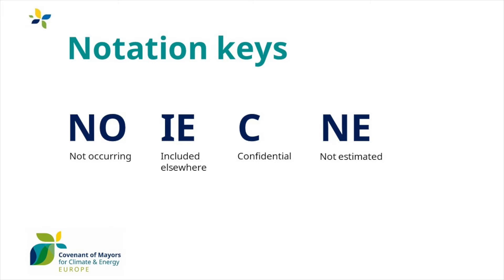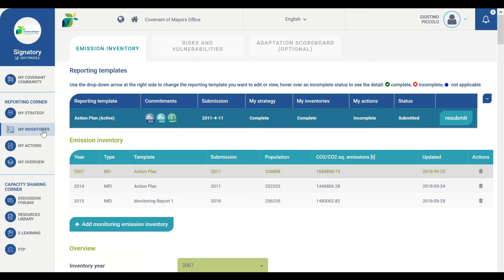You will be able to select another notation key from the drop-down menu included in each cell, or use the same drop-down menu to type in a numerical value. To access the emission inventory section, click on 'My Inventories' in the reporting corner.